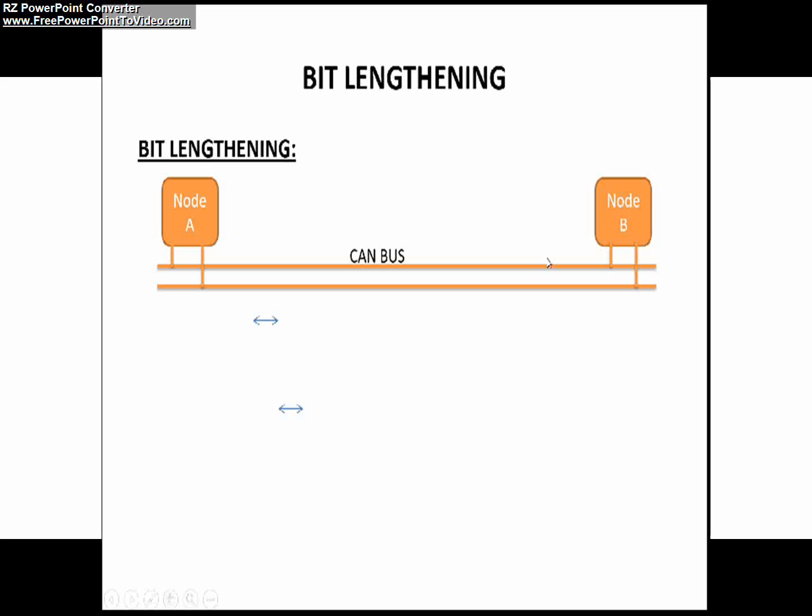That means the transmitting speed of the transmitter is lesser compared to the receiver by how much? One time quanta.